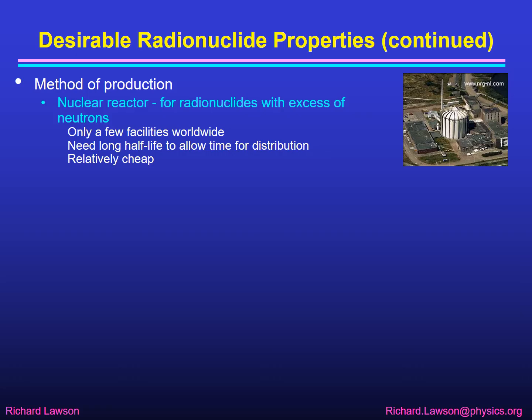We also need to think about the method of production. Nuclear reactors are used for producing radionuclides which have an excess of neutrons. In a reactor there are lots of neutrons flying around, so if you introduce some stable nuclides the excess neutrons will turn them into radioactive forms with too many neutrons. However, suitable nuclear reactors are only a few facilities worldwide, so you need something with a long enough half-life to allow time for it to be distributed from the reactor centre to the hospital where it's going to be used. These do tend to be relatively cheap methods of production.